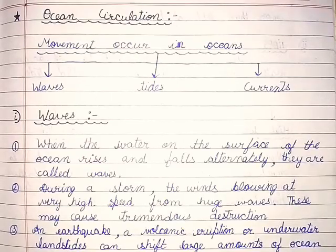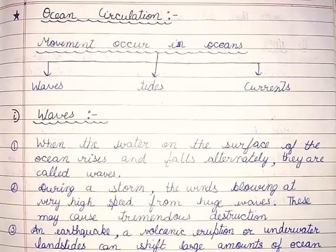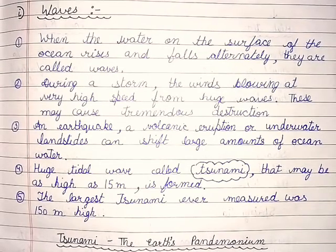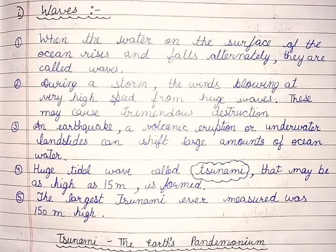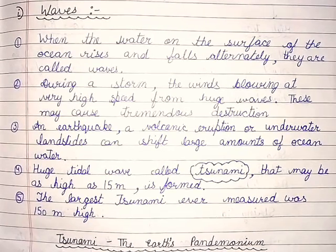Ocean circulation — movements occur in oceans: waves, tides and currents. Waves: when the water on the surface of the ocean rises and falls alternately, they are called waves.